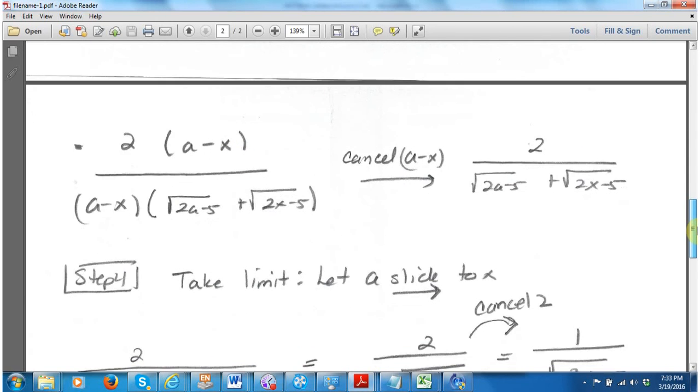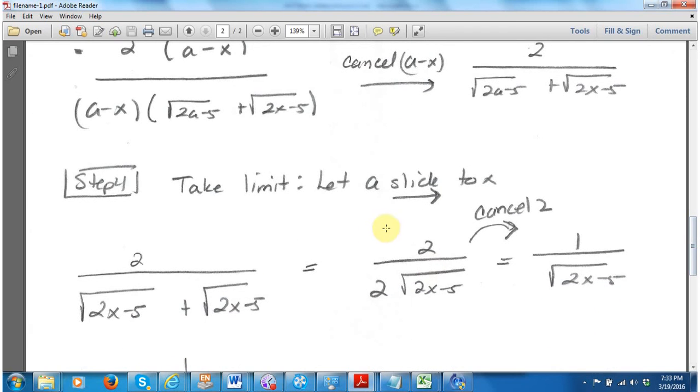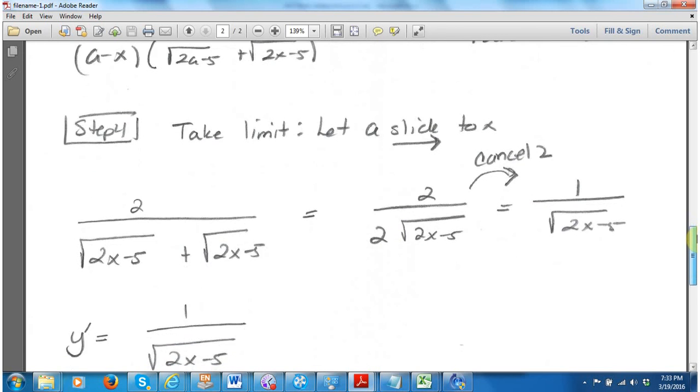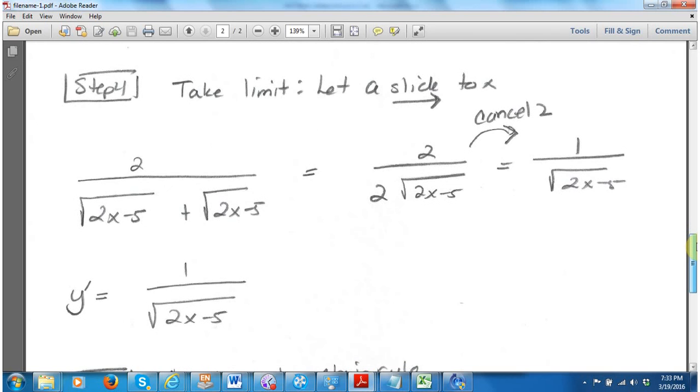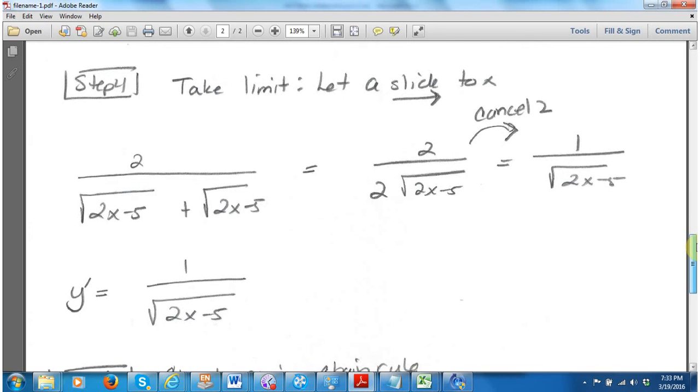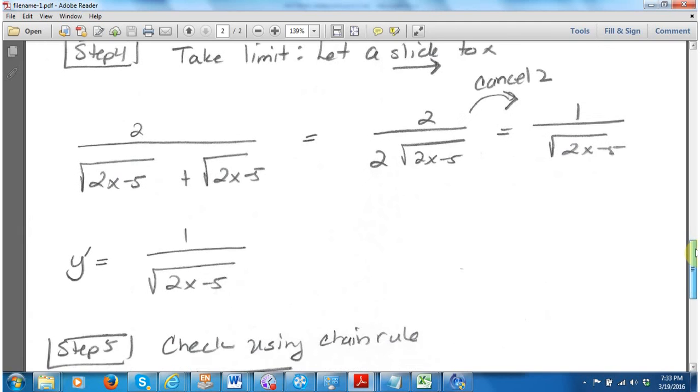And now I can let a slide to x. So I'll let a slide to x, which is called taking the limit. And we get twice the bottom here. Notice now that these 2s cancel out, and I'm left with just 1 over square root of 2x minus 5. So we say the slope is 1 over the square root of 2x minus 5.